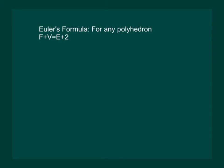Hence we reach the conclusion that for any polyhedron F plus V is equal to E plus 2, where F denotes number of faces, E denotes number of edges, and V denotes number of vertex.